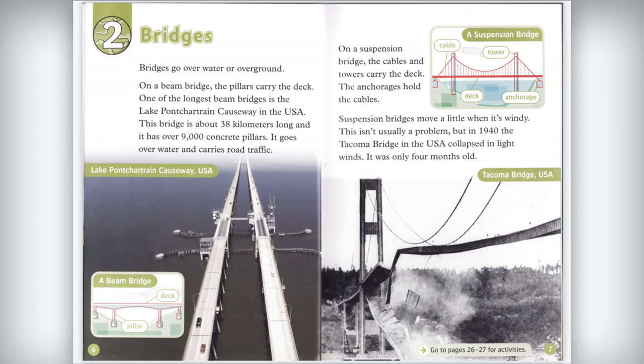On a suspension bridge, the cables and towers carry the deck, and the anchorages hold the cables. Suspension bridges move a little when it's windy. This isn't usually a problem, but in 1940 the Tacoma bridge in the USA collapsed in light winds. It was only four months old.